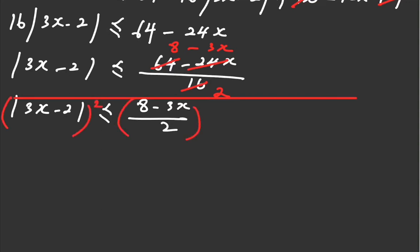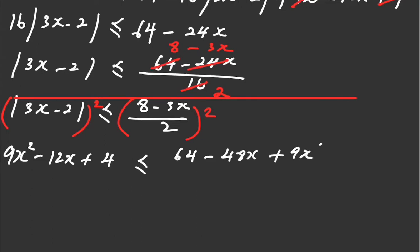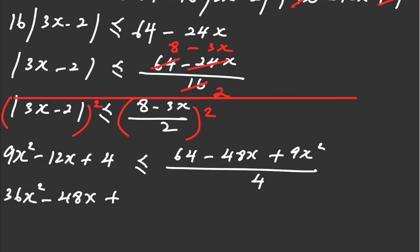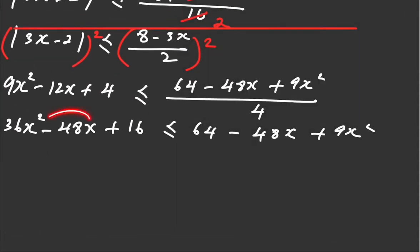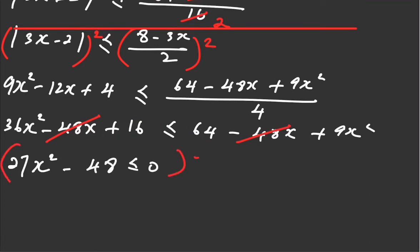We square the left and right hand sides. Bring this 4 over — times 4. Collect the like terms; before that you can simplify equal parts and cut them off. Collecting like terms gives 27x². Collect the like terms, expand it, then divide the whole thing, maybe by 3.